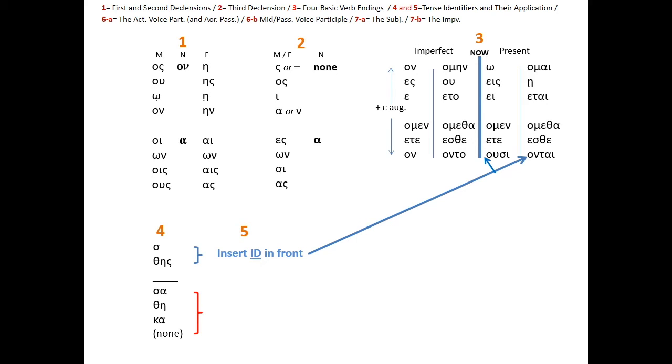The first two tense identifiers above the line, the sigma and the theta-eta-sigma, are for the future tense. The sigma is for the future active and also the future middle, while the theta-eta-sigma is for the future passive. Minimum five explains why they are separated from the other tense identifiers. The remaining four tense identifiers below the line are for the tenses left of the now line in minimum three, the past tenses. The sigma-alpha is the tense identifier for the aorist active and middle. The theta-eta is the tense identifier for the aorist passive. Kappa-alpha is the tense identifier for the perfect active. And none, or the absence of a connecting vowel, understood better with minimum five, is the tense identifier for the perfect middle and passive.